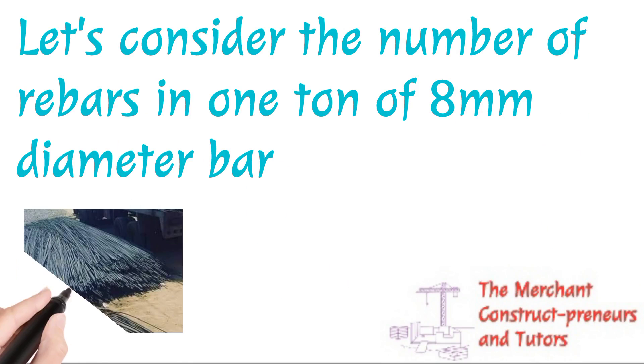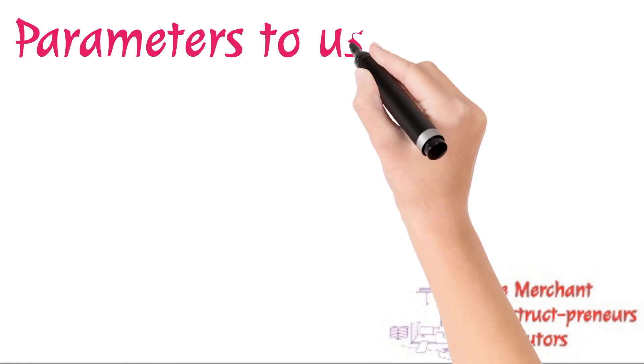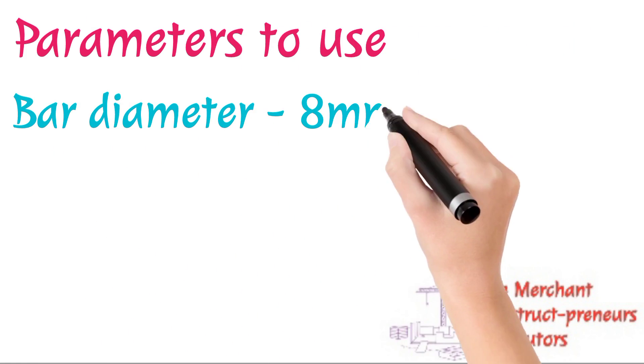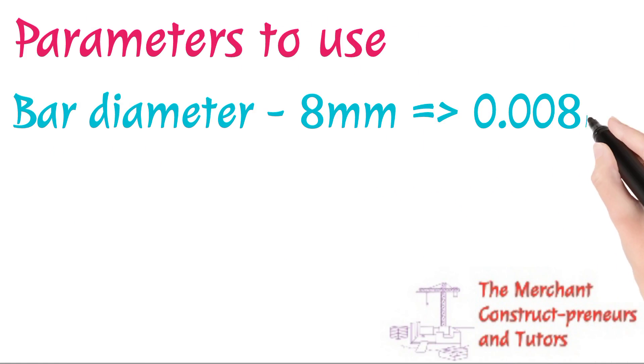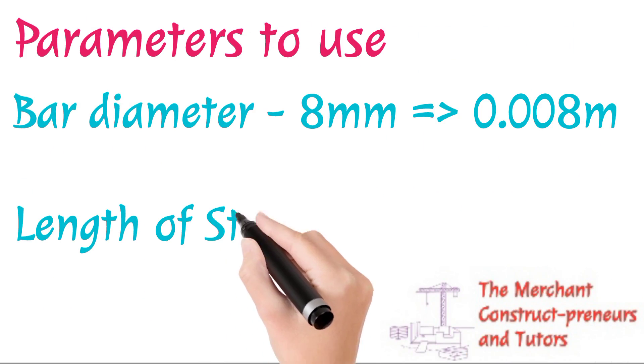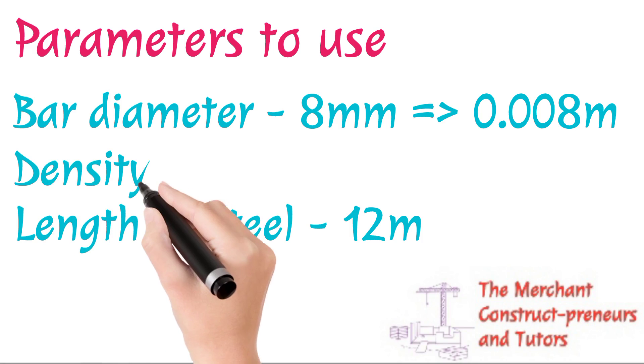So we have different bar sizes by diameters: 8 millimeters, 10 millimeters, 12 millimeters, 16 millimeters, 20 millimeters, 25 millimeters, 32 millimeters, and other sizes. But the most common ones used for reinforced concrete are the ones I listed. So the parameters we're using, 8 millimeters as a sample, we'll use that just as a template in calculating the others.